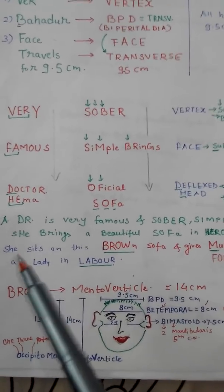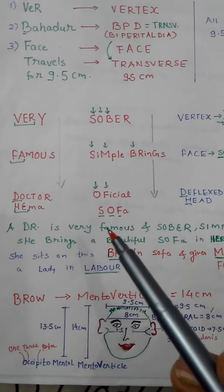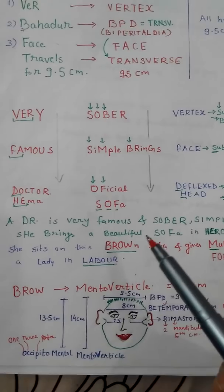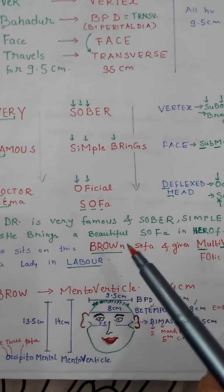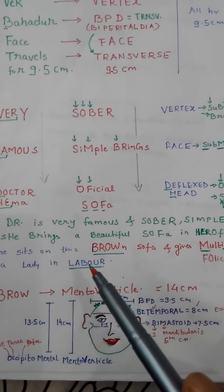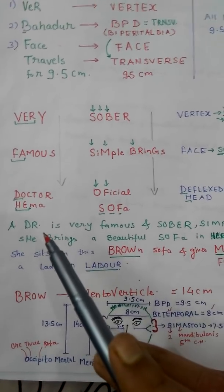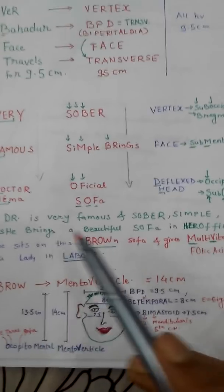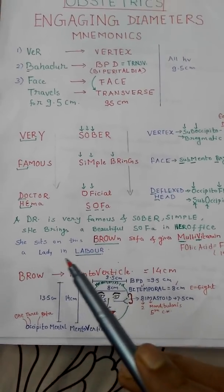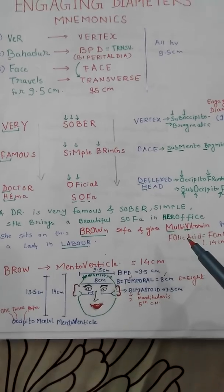Now a short story: a doctor named Hema is very famous, sober, and simple. For her office (hospital) she brings a beautiful brown sofa, and a lady patient in labor comes to her and she gives her a multivitamin — which here is folic acid.